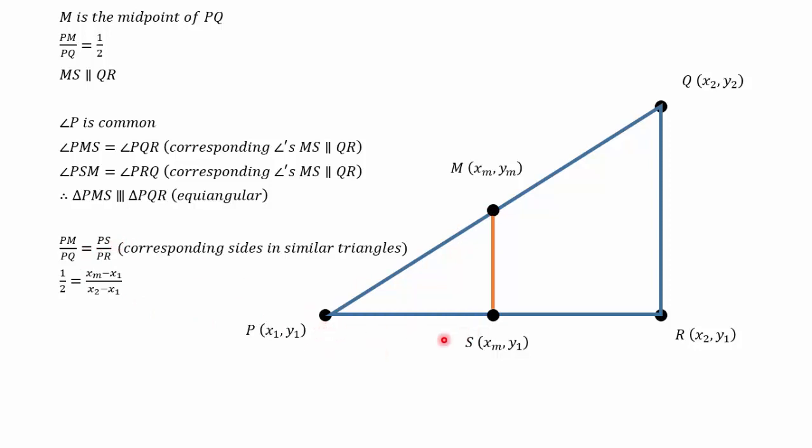PS is the distance here, which is xm minus x1. And PR is the horizontal distance from P to R, which is x2 minus x1. So if I cross multiply, I get x2 minus x1 is equal to 2 bracket xm minus x1.